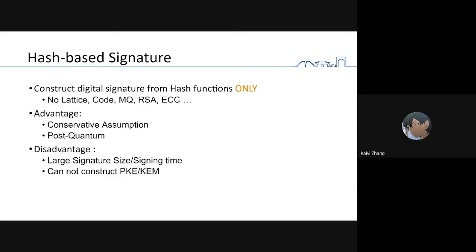Hash-based signature is probably the most conservative assumption for post-quantum cryptography. The bad points are: first, hash-based signatures often have larger signature size and longer sign time. And it is impossible to construct PKE or KEM from hash functions only.